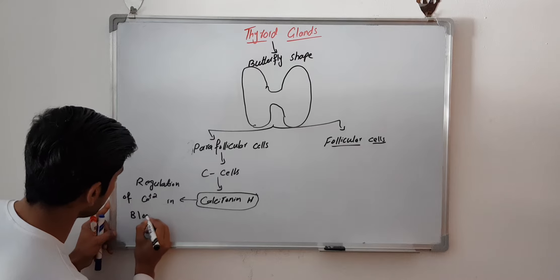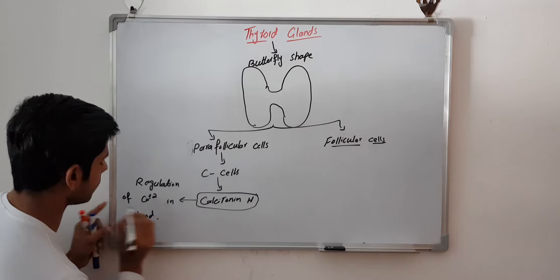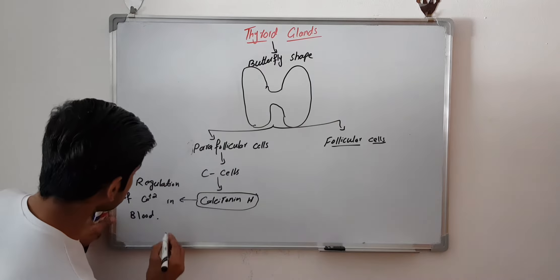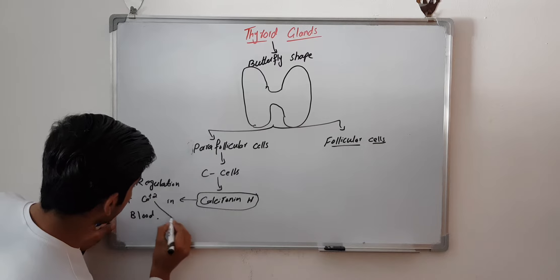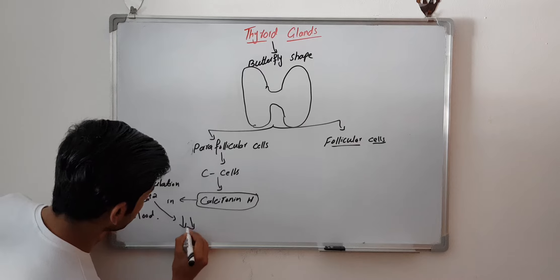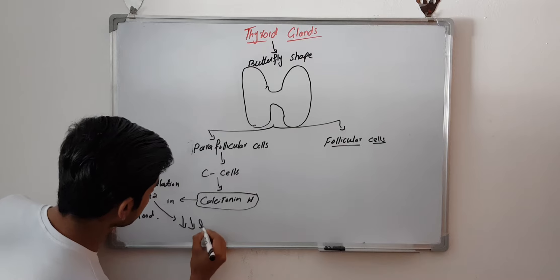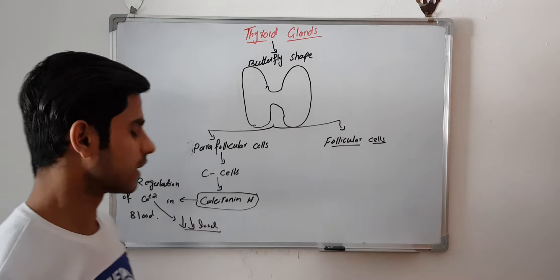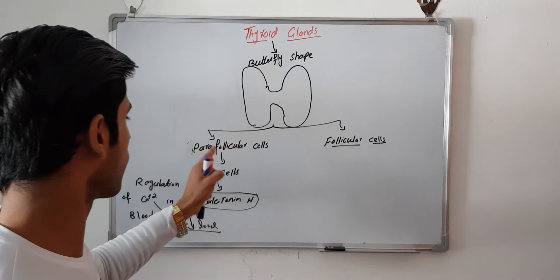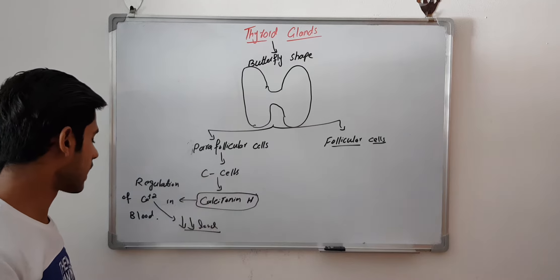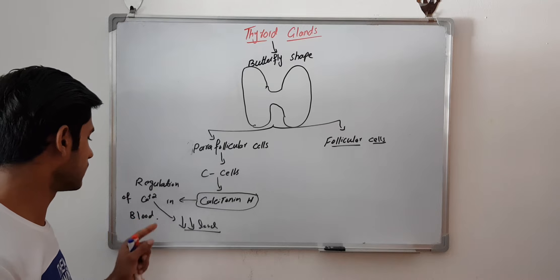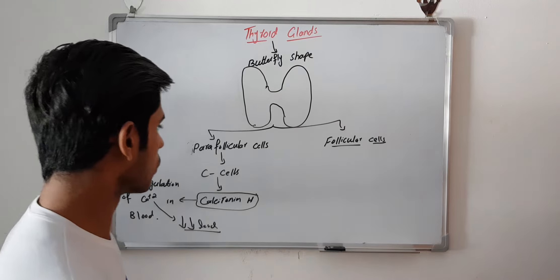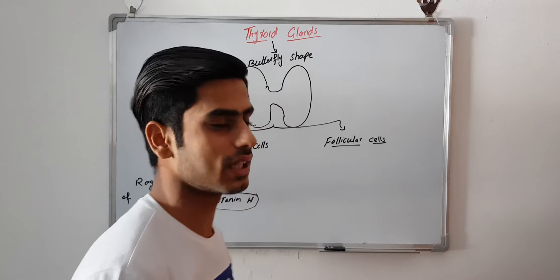Calcitonin regulates calcium ion levels in blood by decreasing the calcium level. So, the function of calcitonin, which is released by the parafollicular cells or C cells, is to decrease the calcium blood level. Now we will move towards the follicular cells.